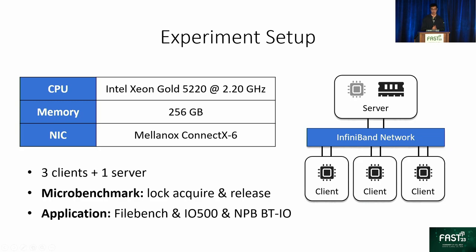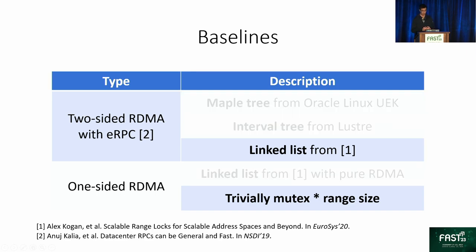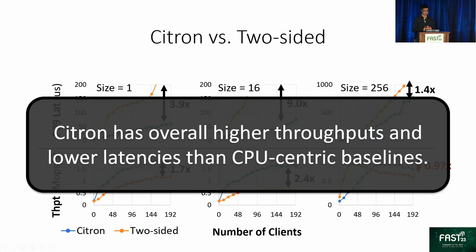We run experiments in a cluster of four machines — one as the server and the other three as clients. We compare Citron with five baseline systems; here we use a CPU-centric and a one-sided RDMA-based solution as examples. Under normal and skewed workloads in both application and microbenchmarks, Citron has much better performance and scalability than the two-sided baseline. It boosts throughput by up to 130% and reduces tail latencies by up to 89%, mainly because Citron bypasses server-side CPUs, eliminating queuing latencies at the server.